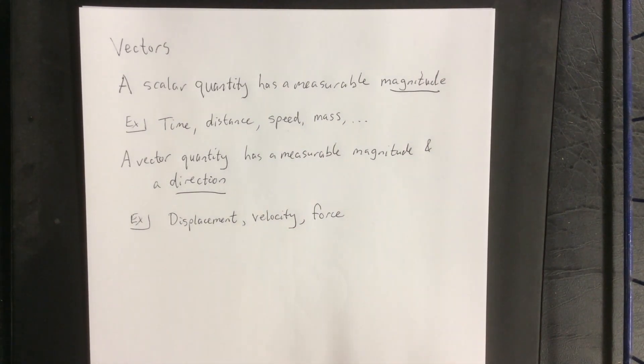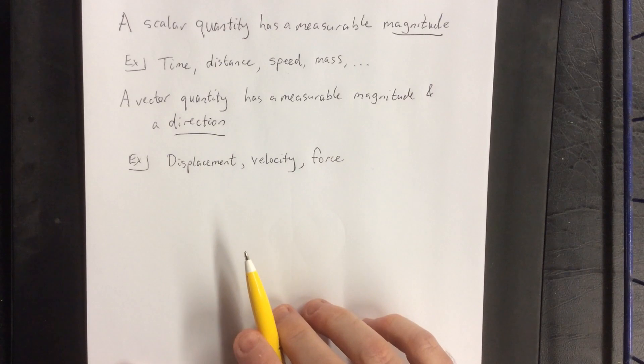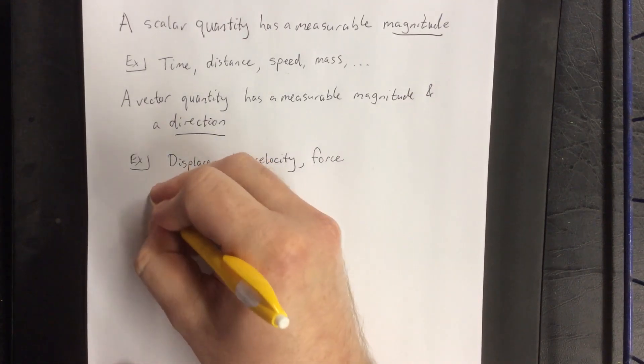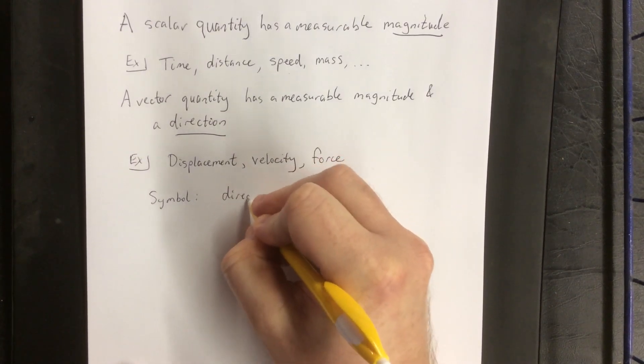Now, in all three of these cases, generally speaking, when we're trying to symbolize that we're dealing with something like this, we're going to use a directed line segment.